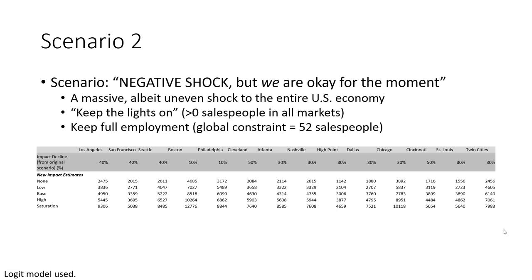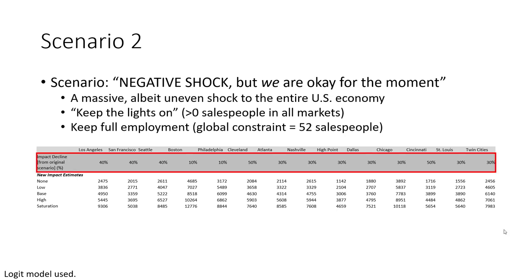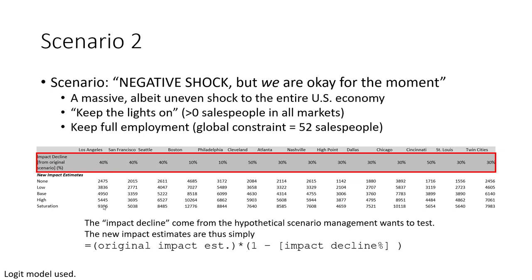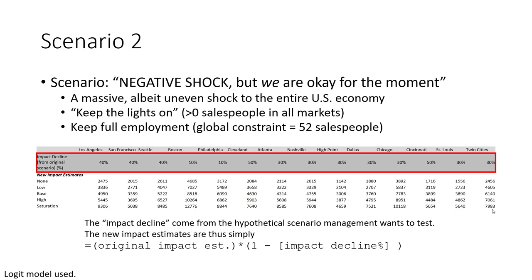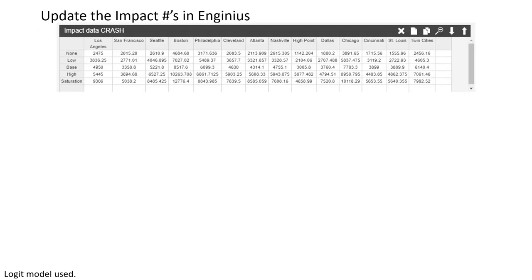The numbers you see here are something I computed in Excel but you would bring over as appropriate into InGenius. These are just hypothetical numbers representing the imagined financial impact — the decline — from the original scenario in each of the 14 markets. From there, we simply derive new impact estimates. These would be the values we copy and paste into the appropriate InGenius table. These numbers are simply the original impact estimates multiplied by one minus the relevant impact decline percentage.